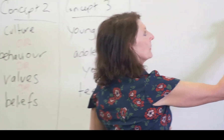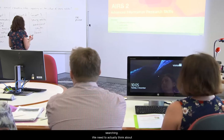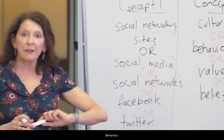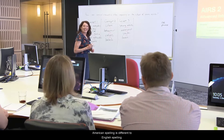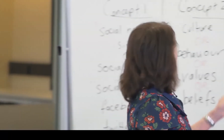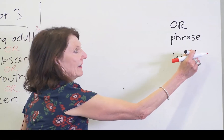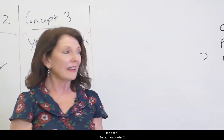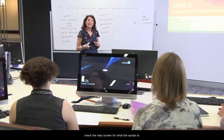So we've looked at OR, and we've looked at phrase searching. We need to think about this word here: 'behaviour'. So can you tell me what the issue is with behaviour, apart from it being good or bad behaviour? Spelling — American spelling is different to English spelling. So we have this little tool called a wildcard. Often it's the question mark, or sometimes it can be the hash. Because databases are so different, you really need to check the help screen for the syntax.